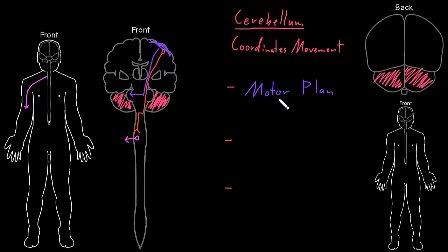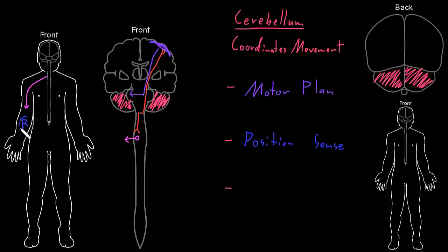Now that the cerebellum is aware of what the motor plan is, it wants to know how the movement is actually going, so it receives position sense information. This is position sense information that isn't reaching consciousness — we're not aware of it, it's just going to the cerebellum. There are receptors involved in position sense, like the muscle spindles that sense stretch of skeletal muscles out in the body. Somatosensory neurons bring that information back into the spinal cord, and then tracks carry that information up into the brain stem and into the cerebellum.